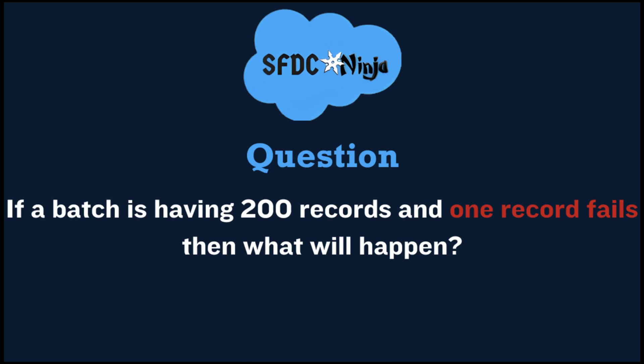The next question is: if a batch has 200 records and one record fails, what will happen? If any record fails, then the whole batch will be rolled back, but other batches will continue to get executed.